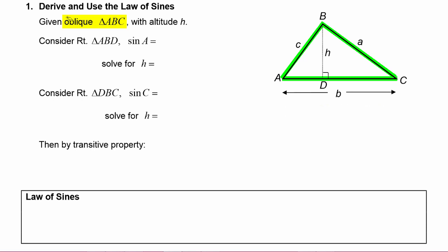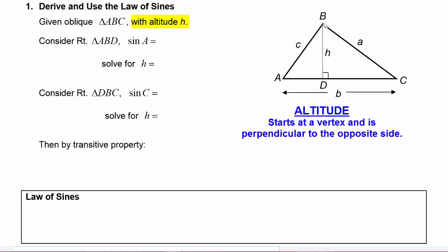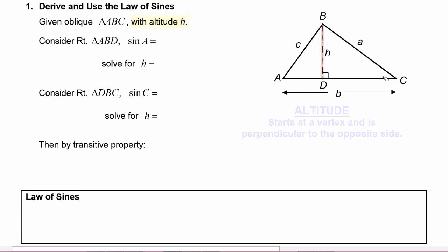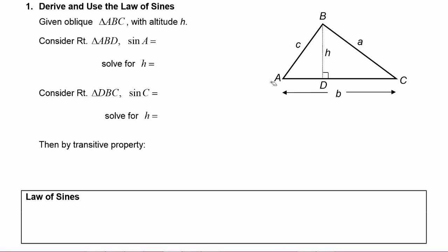In our diagram we have oblique triangle ABC with altitude H. Remember from your geometry class, an altitude starts at a vertex and is perpendicular to the opposite side. That altitude H divides the oblique triangle ABC into two smaller triangles, both of which are right triangles.